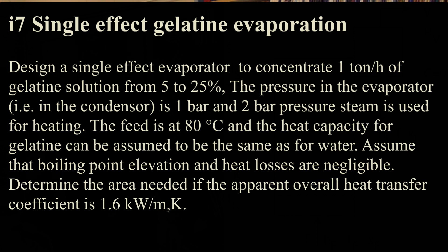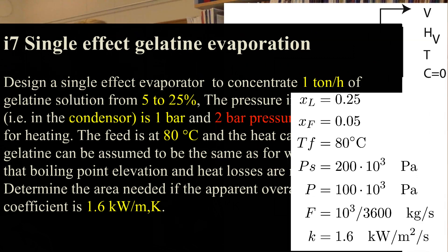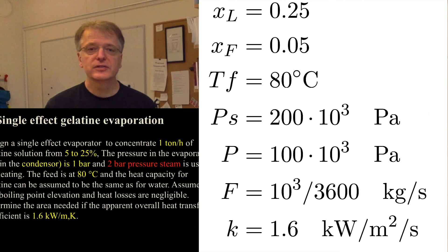Let's highlight the critical information and summarize it. We have that XL is 0.25, XF is 0.05, the temperature of the feed is 80 degrees Celsius, pressure of steam is 2 bar, that is 200 kPa.